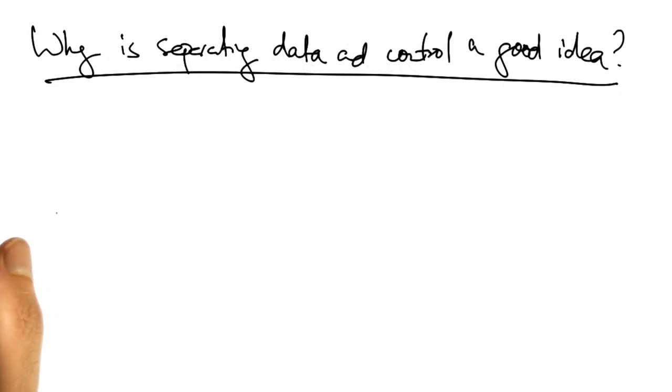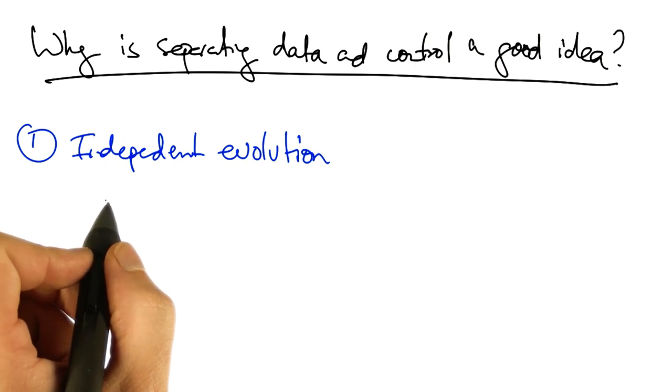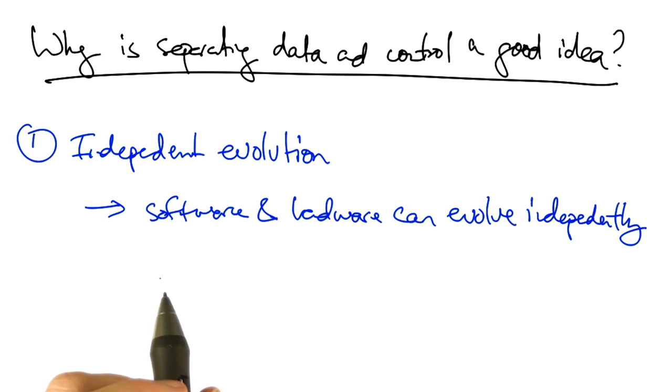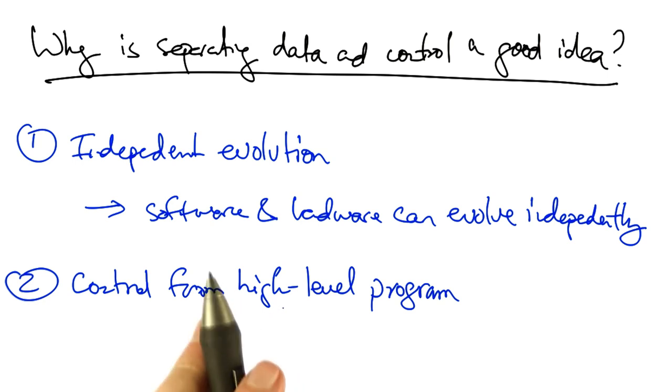So why is separating the data and control planes a good idea? The first reason is independent evolution and development. Thus, software control of the network can evolve independently of the network hardware.